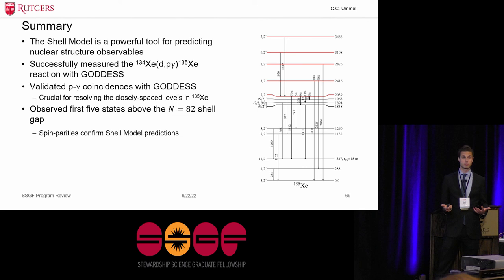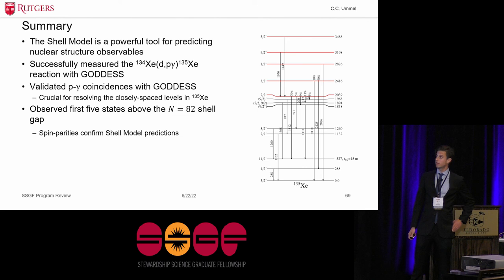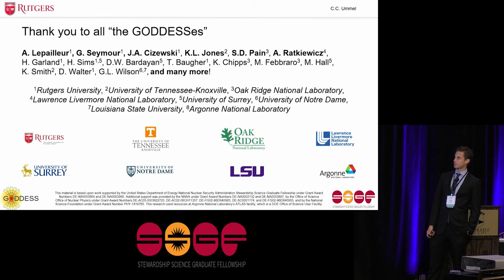So to summarize, I hope I've convinced you that the shell model is a powerful tool for predicting nuclear structure observables. We've successfully measured the xenon-134 d,p,gamma xenon-135 reaction with GODDESS. And in doing so, we've validated particle-gamma coincidences with GODDESS, which were really crucial for resolving these really closely spaced levels in xenon-135. And we observed the first five states above the n equals 82 shell closure in xenon-135. And spin parities confirm shell model predictions, and spectroscopic factors are hopefully forthcoming.